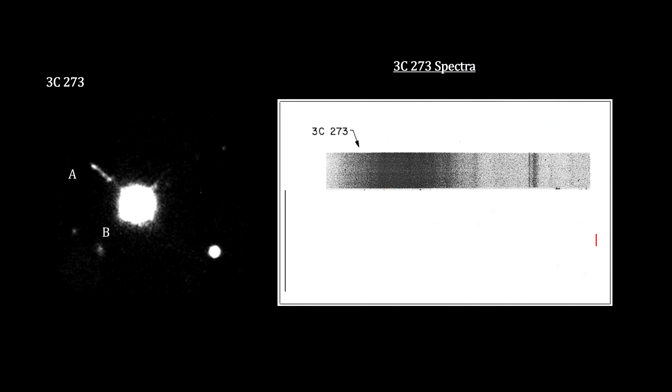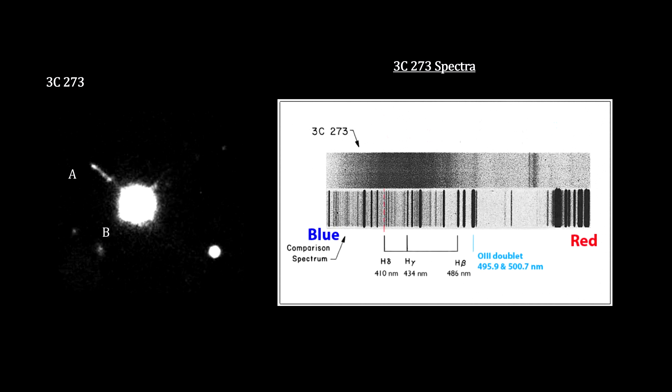In December 1962, the accurate position of 3C273 obtained by Hazard was passed on to Caltech astronomer Martin Schmidt. Using the 200-inch Mount Palomar telescope, Schmidt obtained an image and spectra of the source.